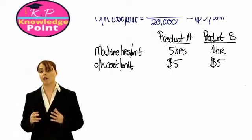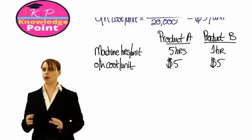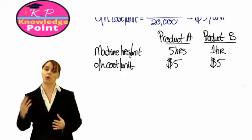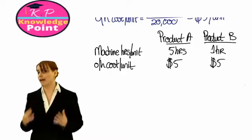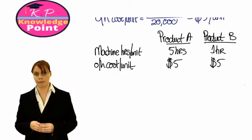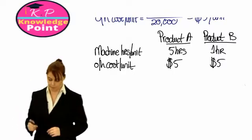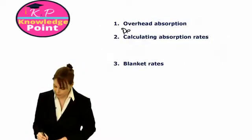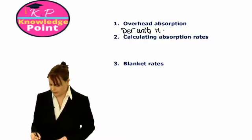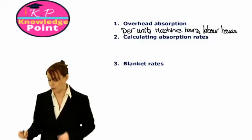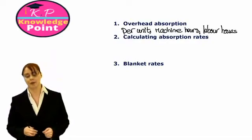For most companies, their overhead absorption rate — their overhead cost per unit — is calculated using machine hours or labour hours, because this is a better reflection of how the costs are incurred within the company and on a per-product basis. Our overhead absorption can be per unit, but is more likely to be by machine hours or by labour hours. We'll look at which one to use when we get into a couple of questions.